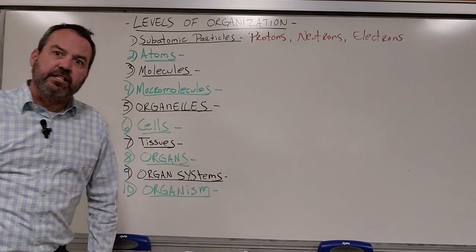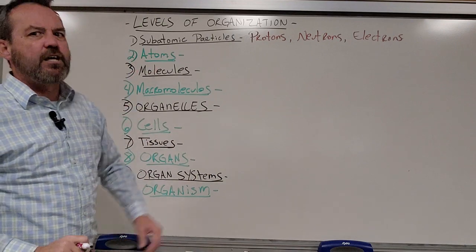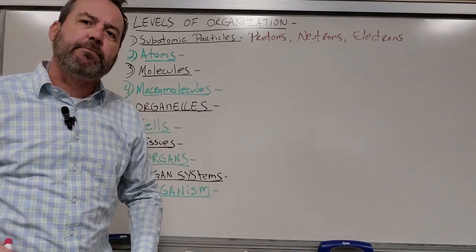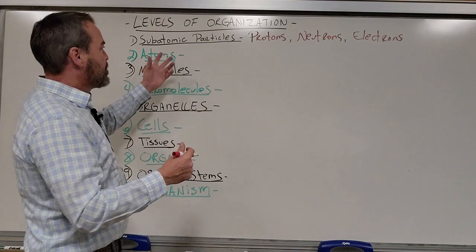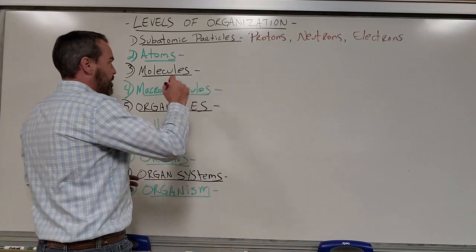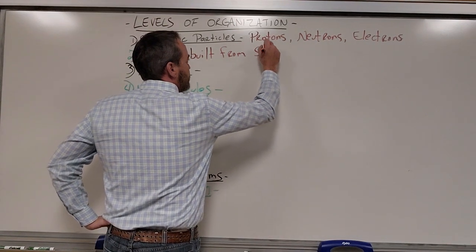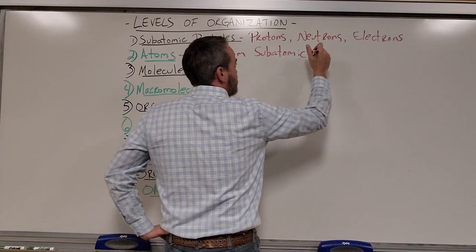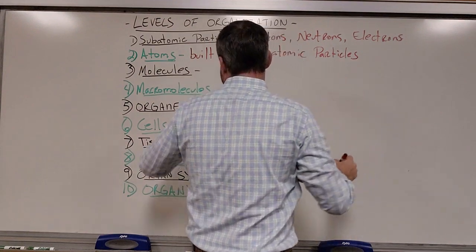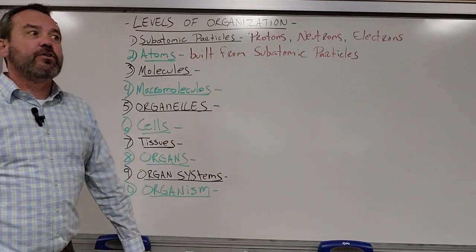These are my building blocks — the simplest structures we're going to be looking at as far as my levels of organization is concerned: subatomic particles — protons, neutrons, and electrons. We're going to take these and combine them to build something more complex, and that's how we build our atoms. Atoms are just a collection of all of the protons, neutrons, and electrons that we've built. Then we take those atoms and combine them together to make something more complex — that's how we build our molecules.